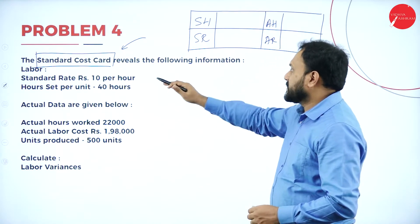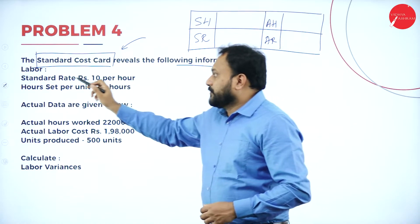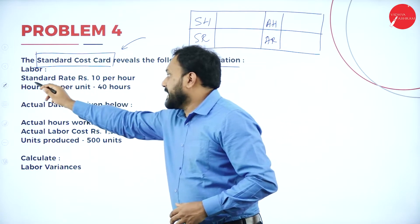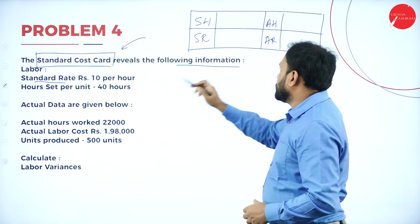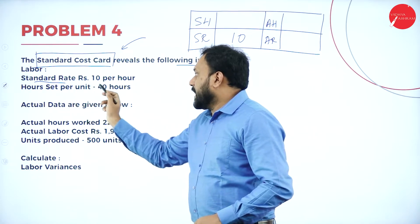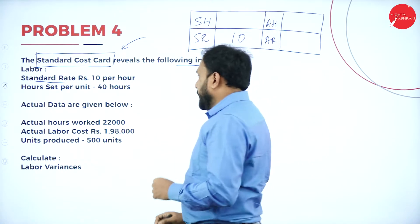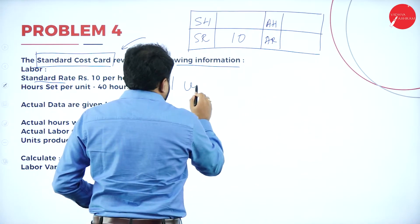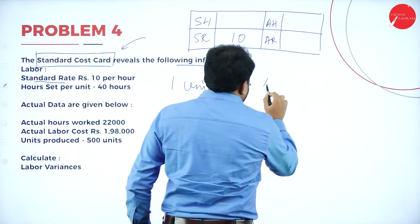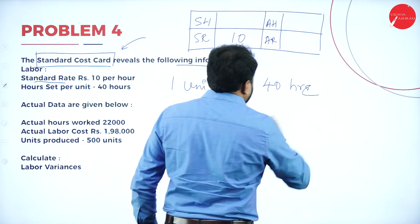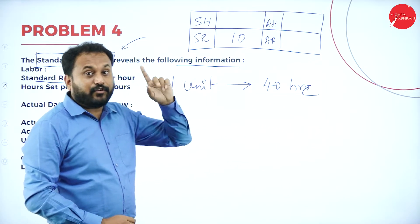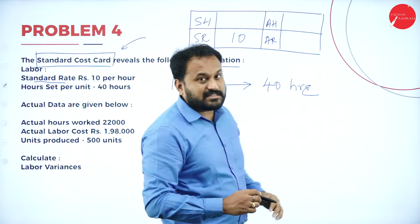The standard cost card reveals the following information. For labour, the standard rate is rupees 10 per hour. So SR is 10 — that's my first entry. Also, the standard is 40 hours per unit, meaning to manufacture one unit, they take 40 hours.